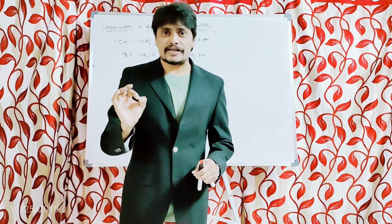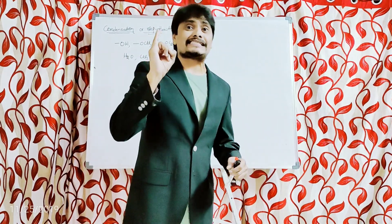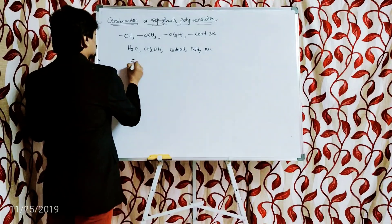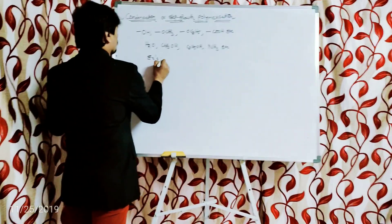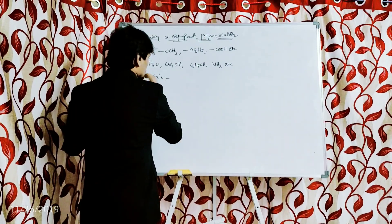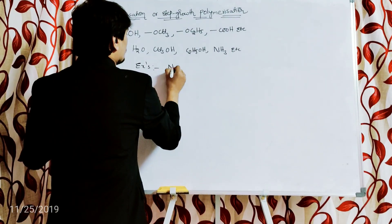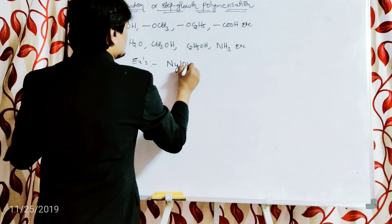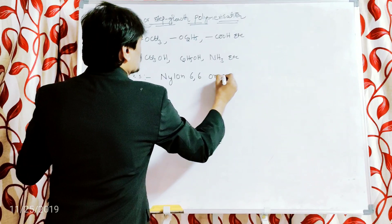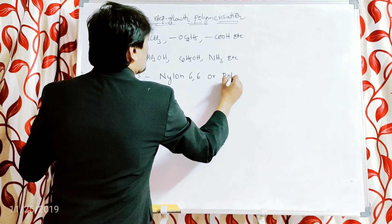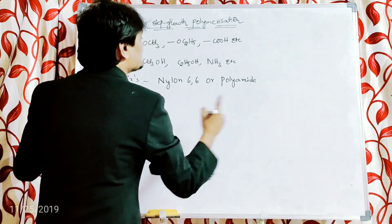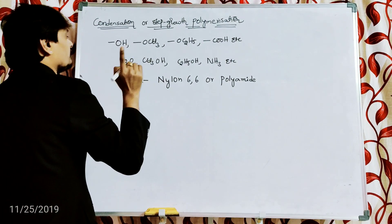Nylon 6-6 is one example. Nylon 6-6 is also called polyamide. Why it is called polyamide I am going to discuss in the next immediate video after this one.